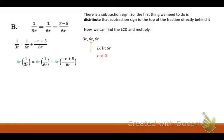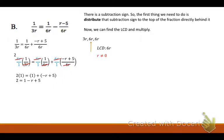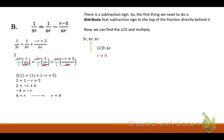Now I'm going to multiply everything by 6r, putting them over 1 to make it easier. In the first term, the r's cancel and 3 goes into 6 twice, so I'm left with 2 on top. The second term, 6r cancels with 6r. The last term, the 6r's cancel. So I'm left with 2 times 1 equals 1 plus (negative r plus 5), which gives 2 equals 1 minus r plus 5, or 2 equals negative r plus 6. Subtract 6: negative 4 equals negative r, so r equals positive 4. Since 4 is not 0, we're good — that's our final answer.